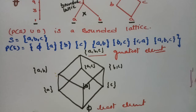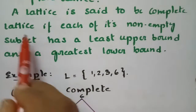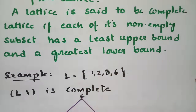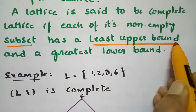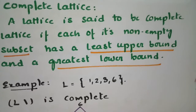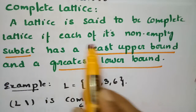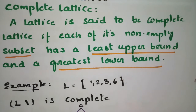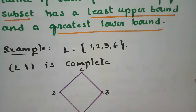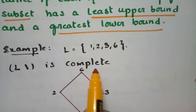Next, let us discuss the complete lattice. A lattice is said to be a complete lattice if each of its non-empty subsets has a least upper bound and a greatest lower bound. For example, consider L = {1, 2, 3, 6} under divisibility. Let us verify this is a complete lattice.